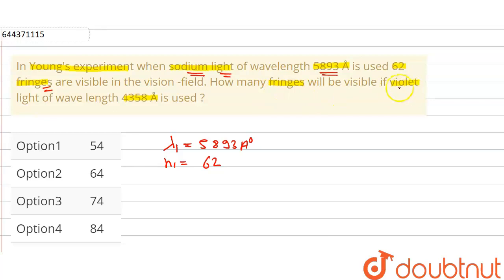Now in the question we are asked, if we use violet light of wavelength 4358 angstrom, we can take our lambda 2 as 4358 angstrom. Then how many fringes will be formed? We have to find N2, the number of fringes when we use violet light.